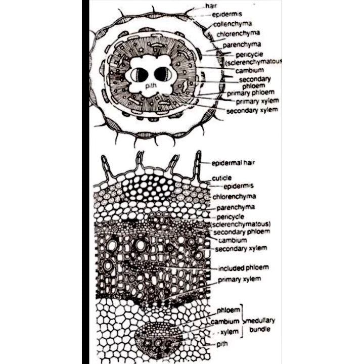Old stems show secondary growth as well. In the old stem, the vascular system consists of primary phloem, secondary phloem, cambium, secondary xylem, conjunctive tissue with included phloem, and primary xylem. You can see clearly in the figure that the primary phloem is crushed and obliterated. Primary xylem is present near the pith, and within the conjunctive tissue are groups of included phloem, also called inter-xylem phloem.